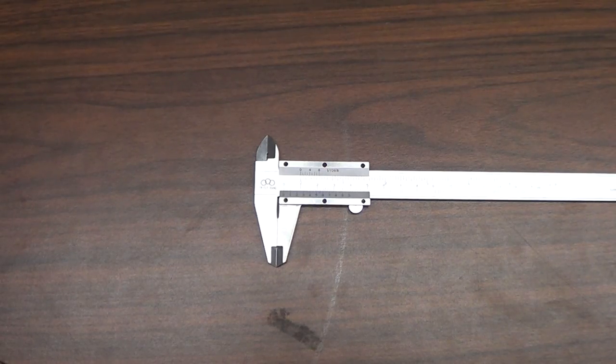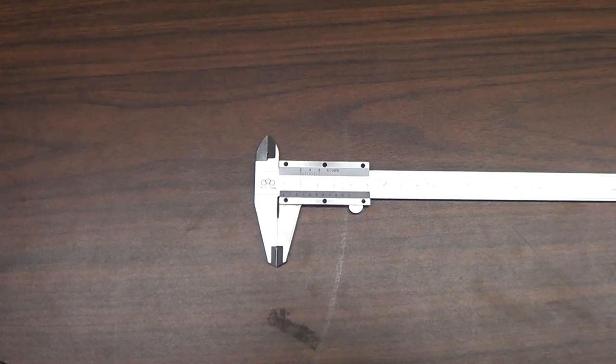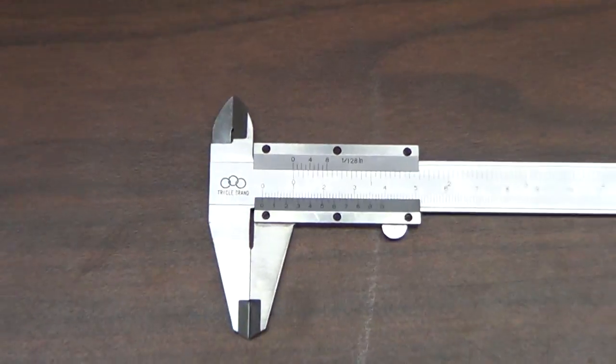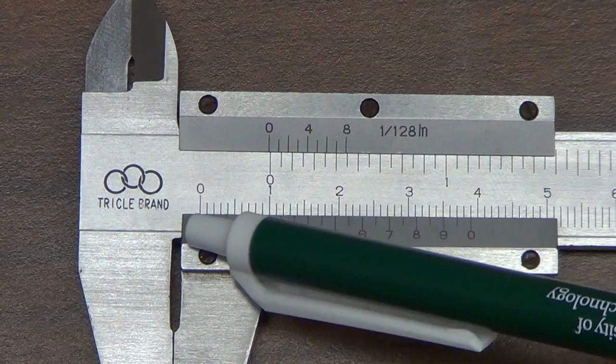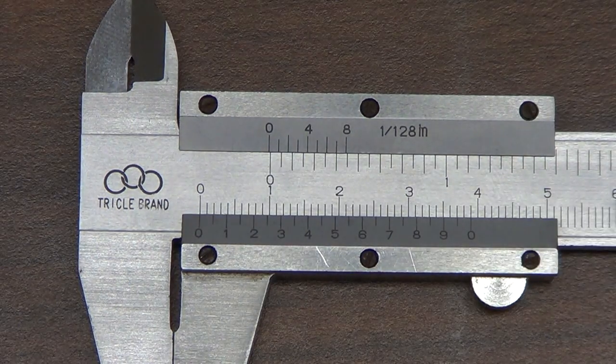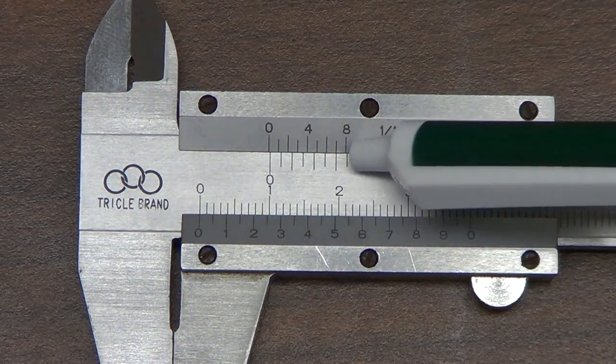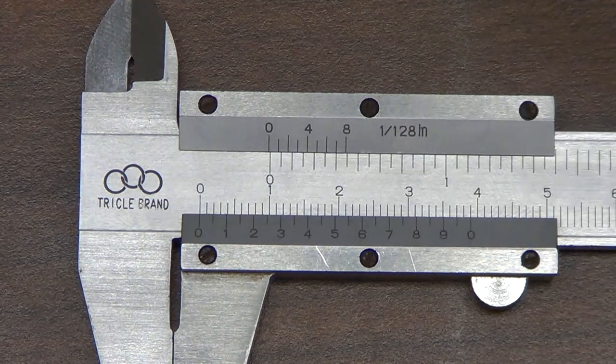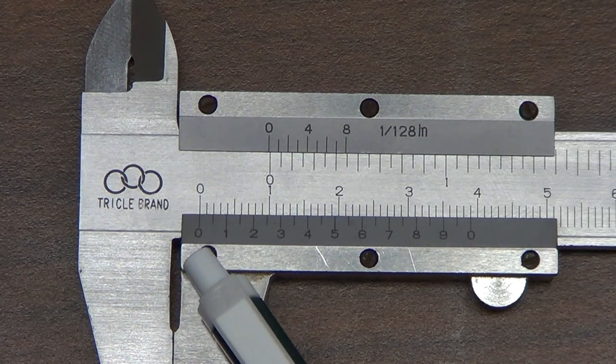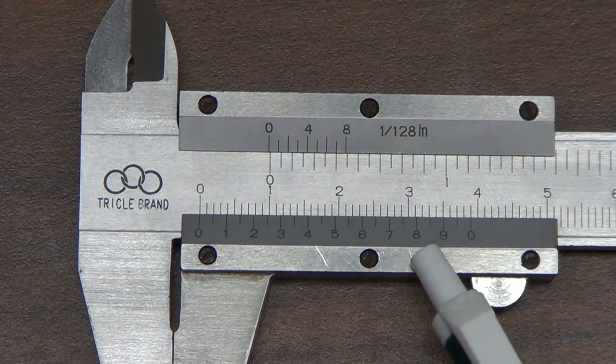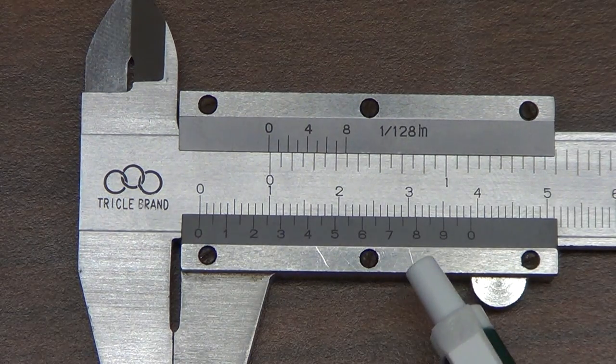Now we'll work with a vernier caliper. The way this works is that there is, again, an upper and lower scale. Here, this is the centimeters—zero, one, two, three—on this axis here. And then on the upper, we have inches, which we're going to neglect for our use. And then this is the lower scale down here—zero, one, two, three, up to nine—and then zero again is the minor scale.